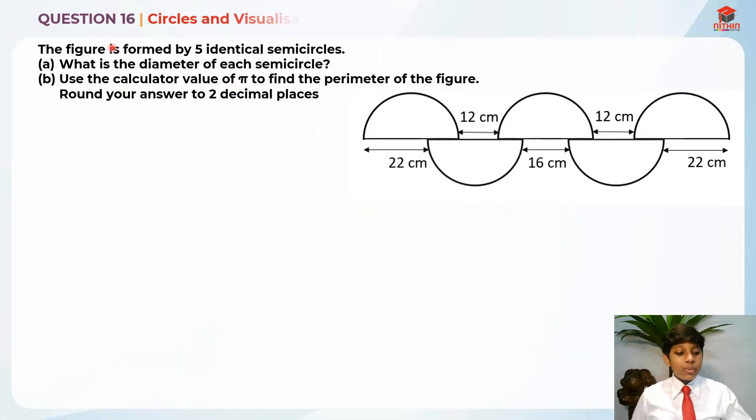This is question 16 and this question is testing us on circles and visualization. This question was actually pretty tough or really tricky. If you know how to solve part A, you can solve part B really easily. Let's read the question for part A first. The figure is formed by five identical semicircles. Part A asks: what is the diameter of each circle?